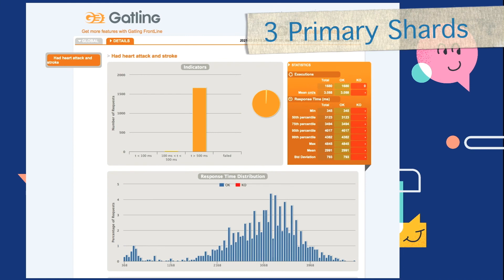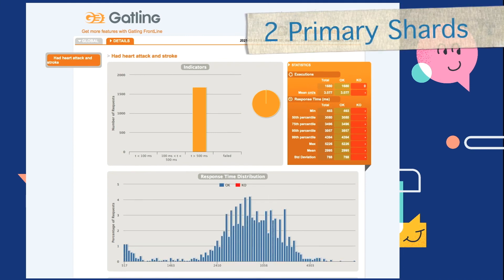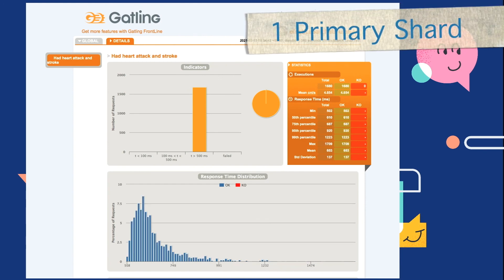In more complex scenarios, it's also a good idea to pay attention to our response time distribution. Every load test done in Jenkins is recorded by Gatling and can be downloaded and opened up in a browser, where you can check out the response time distribution for each particular query you may have set up.